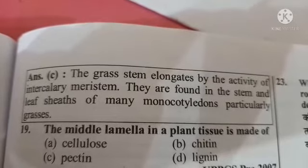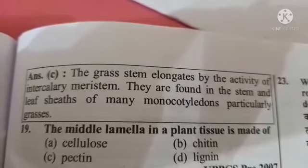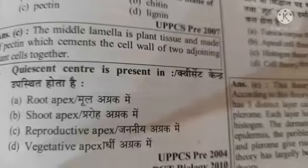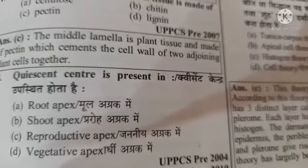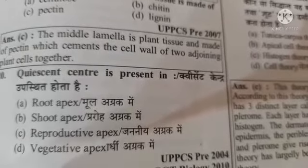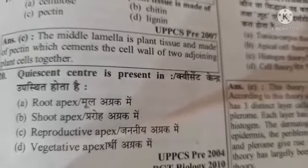Next question: the middle lamella in plant tissues is made up of option A cellulose, option B chitin, option C pectin, option D lignin. The answer is option C, pectin. Next question: the quiescent center is present in option A root apex, option B shoot apex, option C reproductive apex, option D vegetative apex. The answer is option A, root apex.